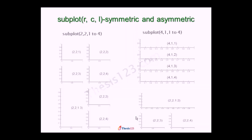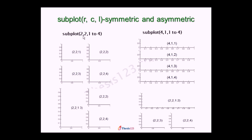Let us see some examples of asymmetric and symmetric subplots. Subplot(2, 2) means 4 plots, locations 1, 2, 3, 4. Similarly, subplot(4, 1) means 4 rows, 1 column — so locations 1, 2, 3, 4 stacked vertically. For an asymmetric plot, subplot(2, 2) with locations 1, 2, 3 gives three panels, and location 4 is the fourth. Similarly, subplot(2, 2, 4) fills the last window. Like this we can divide the single plot window into subplots.